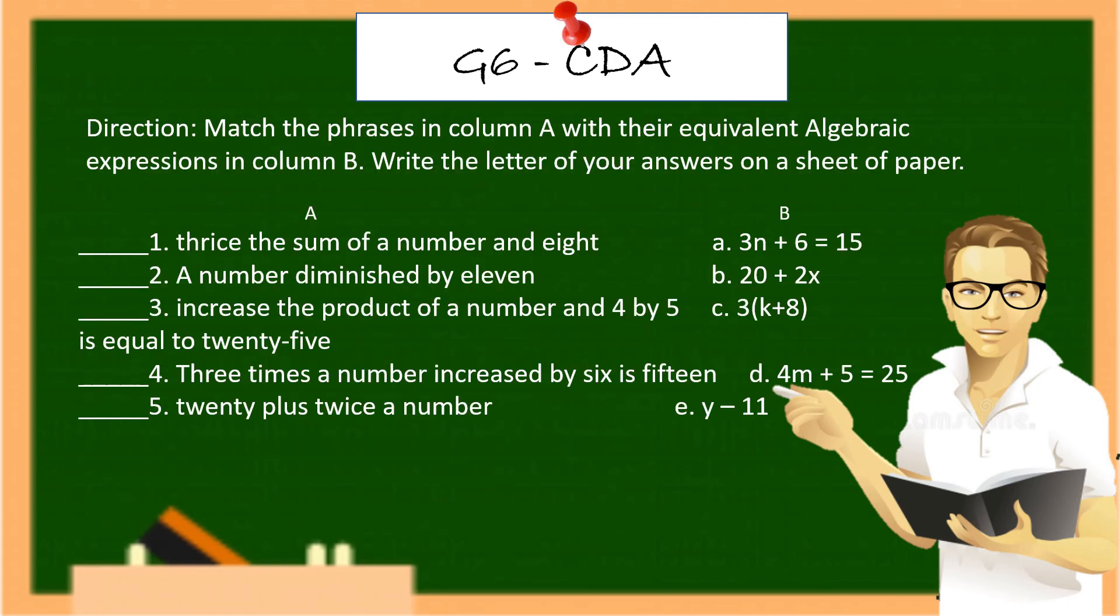Direction: Match the phrases in column A with their equivalent algebraic expressions in column B. Write the letter of your answer on a sheet of paper. So, guys, be ready. Number 1, thrice the sum of a number and 8. Number 2, for column A, a number diminished by 11. Number 3, increase the product of a number and 4 by 5 is equal to 25. Number 4, 3 times the number increase by 6 is 15. Number 5, 20 plus twice a number.